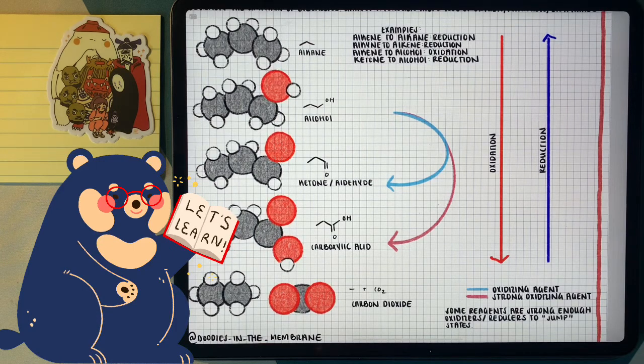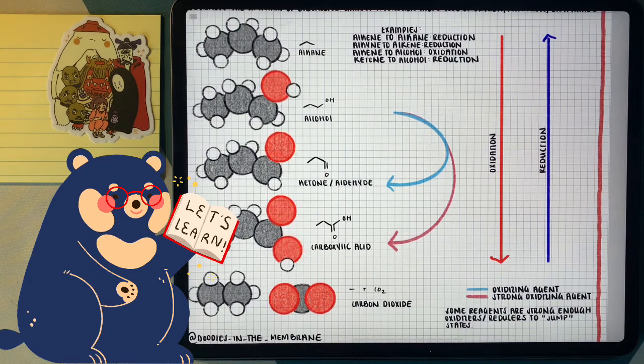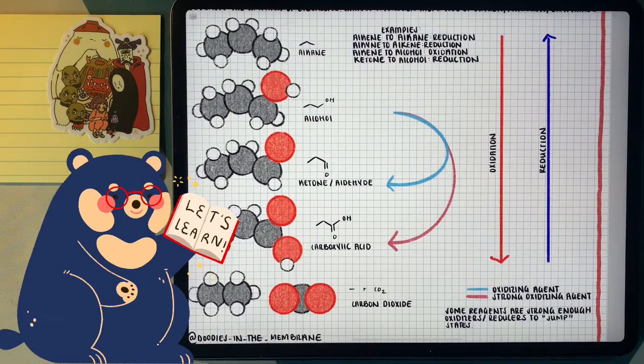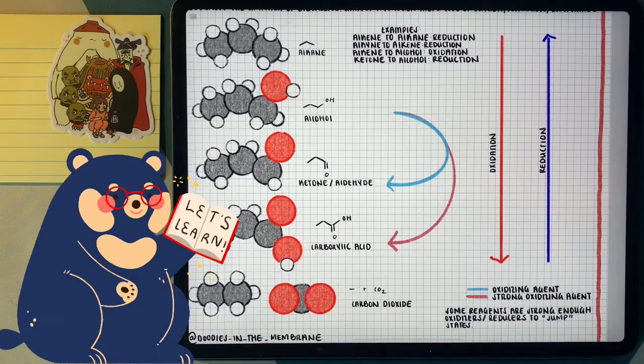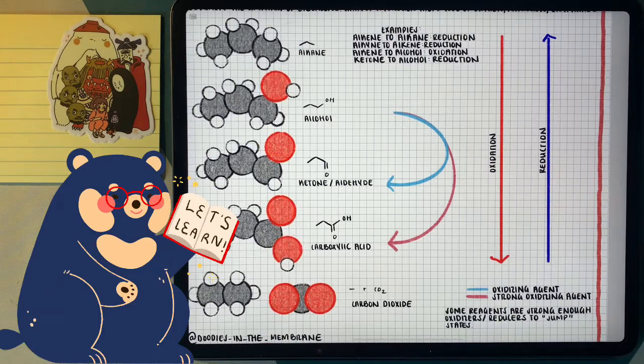Now, when we look at different reagents or different chemical compounds that are going to be oxidizing or reducing our reactants, there's strong oxidizers reducers that can make big jumps, such as an alcohol straight to a carboxylic acid, whereas there's weaker ones that would do just single steps, for example, an alcohol to a ketone or aldehyde.